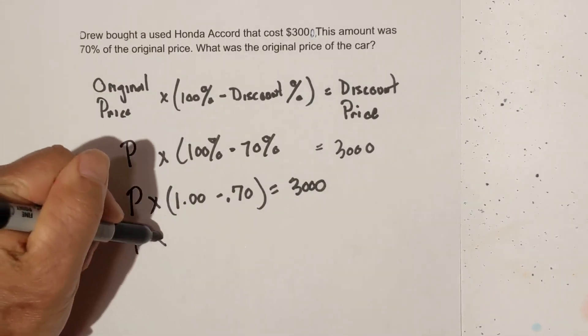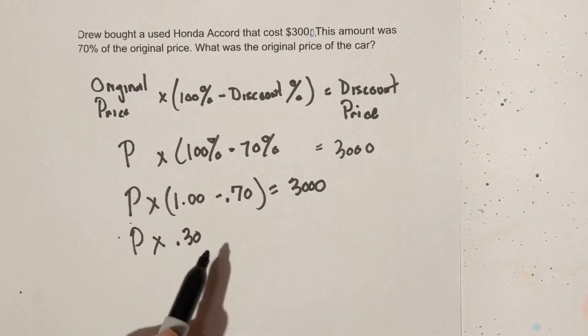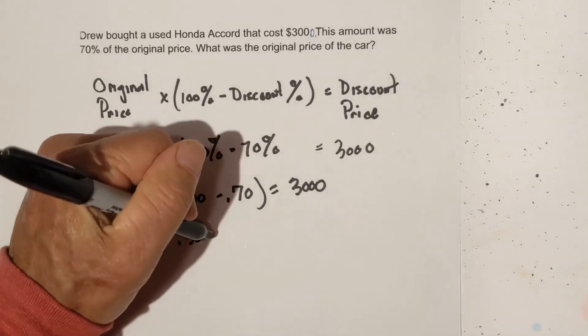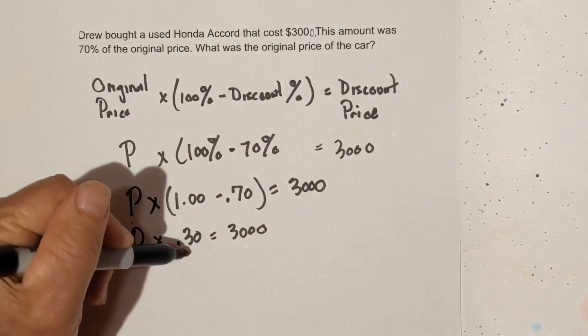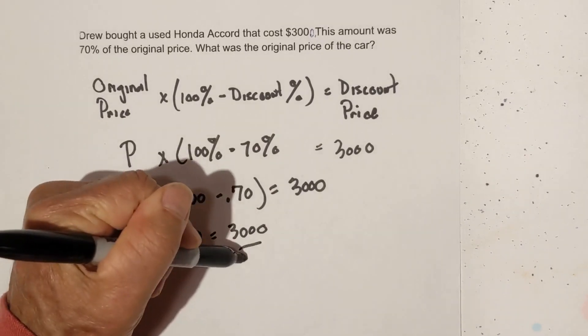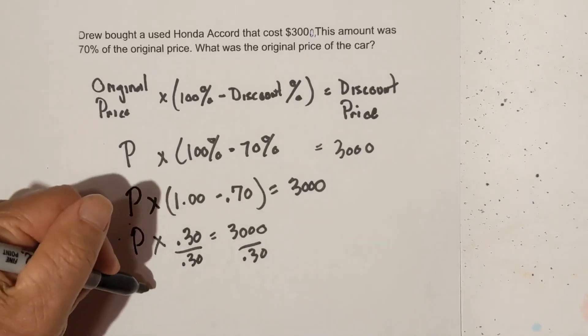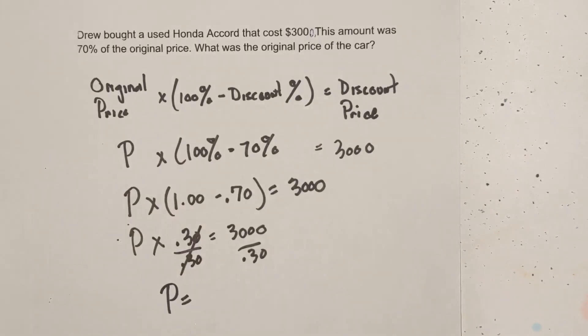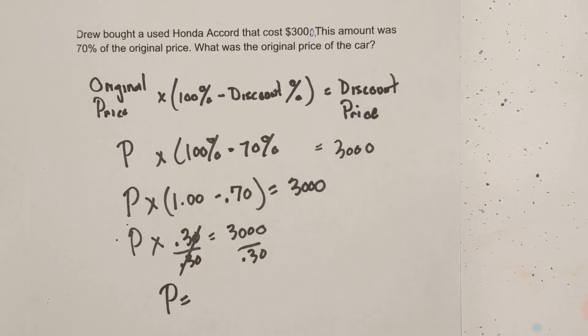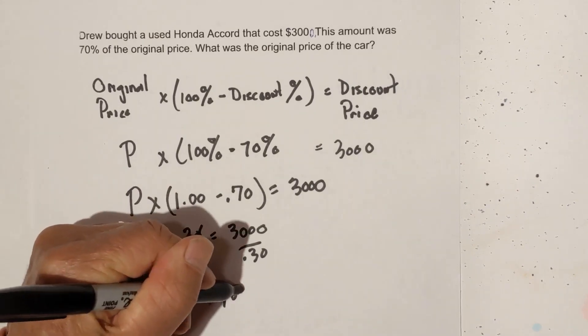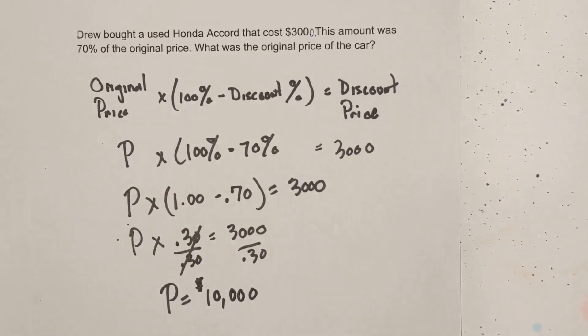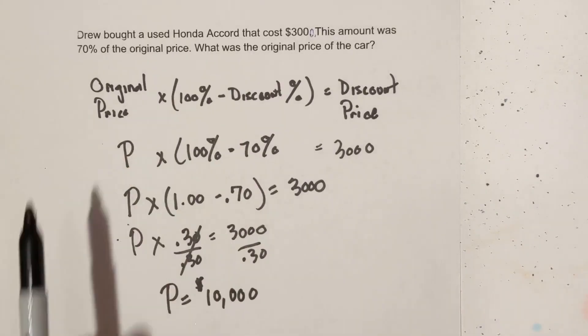Now we have P times 0.30. We get this by 1 minus 0.70 equals 3,000. We're going to divide each side by 0.30 because we're going to undo the multiplication using division. These cancel and P equals 3,000 divided by 0.30. And when I put this in my calculator, that comes out to be $10,000.